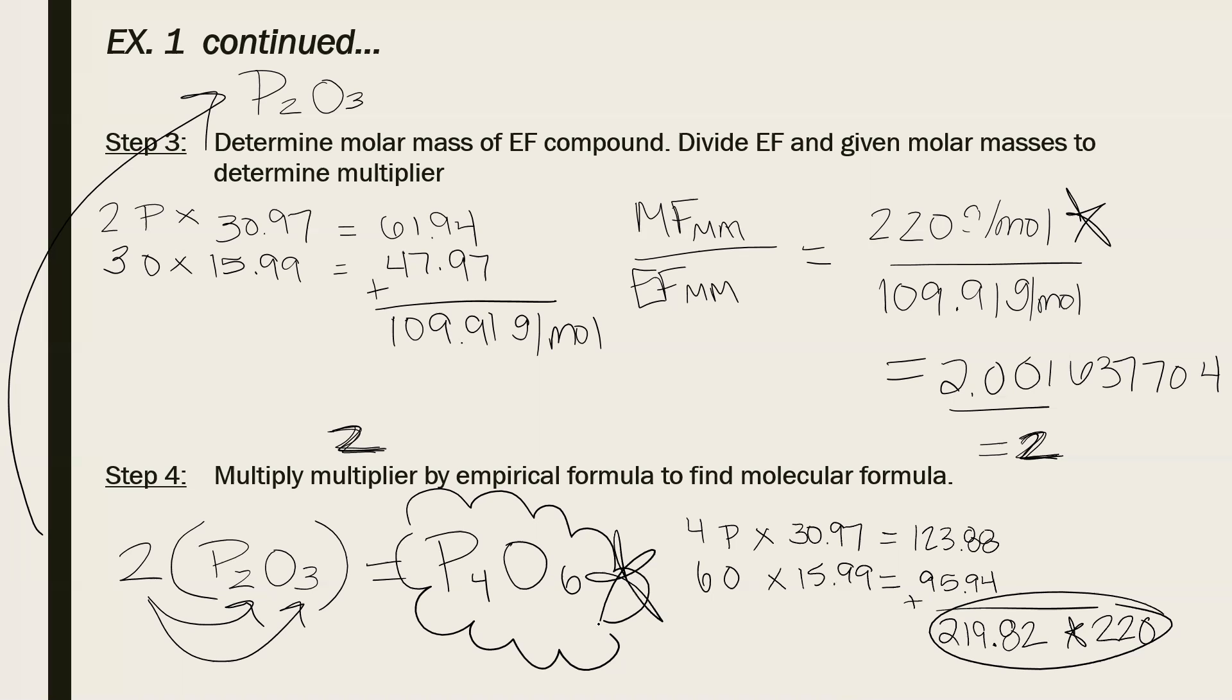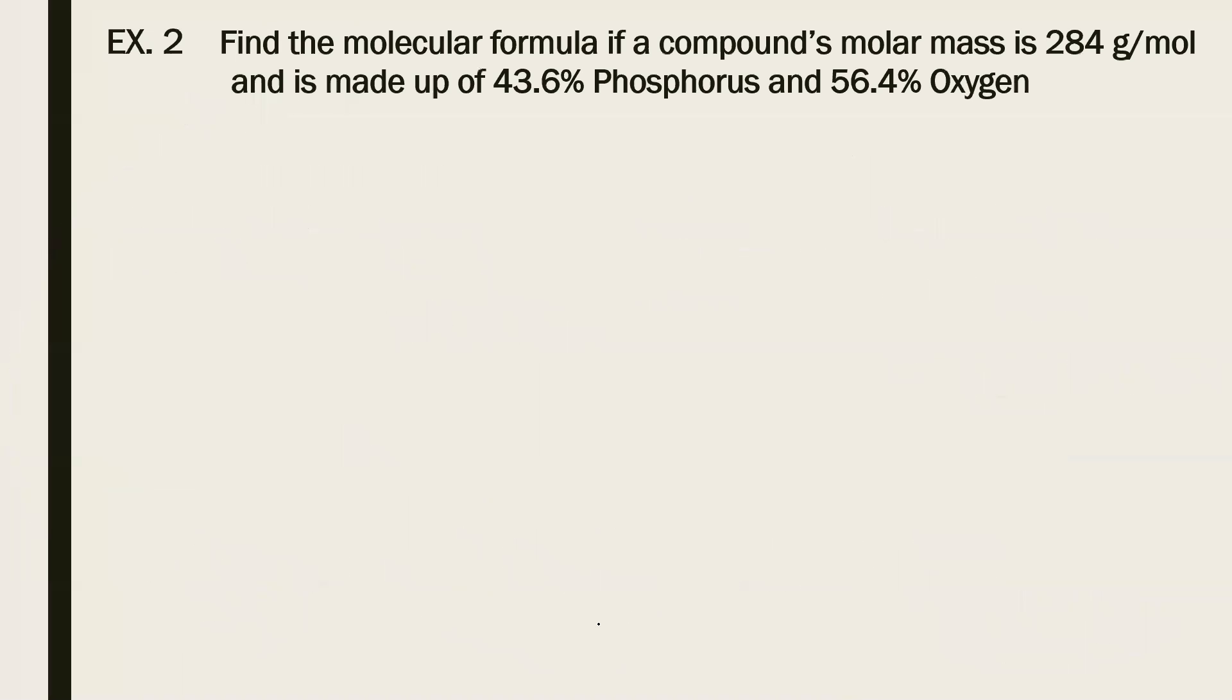Alright, let's try another one where it's a little bit iffy again with the ratio. So number two, find the molecular formula if a compound's molar mass is 284 grams per mole and it is made up of 43.6% phosphorus and 56.4% oxygen.